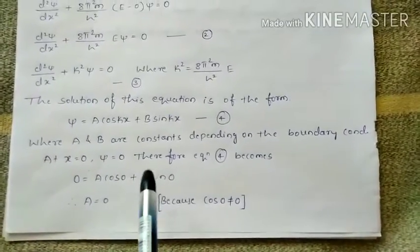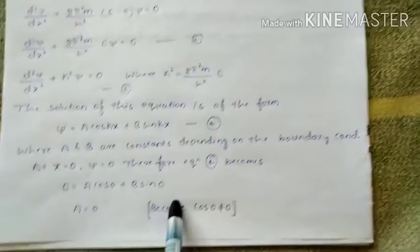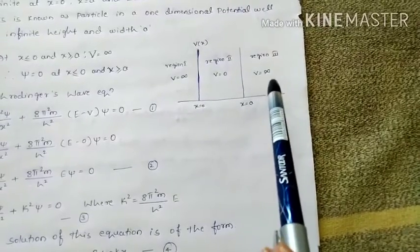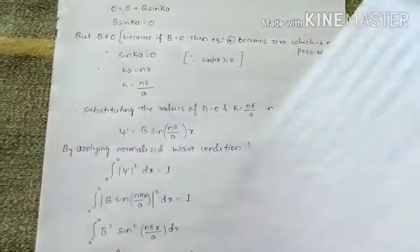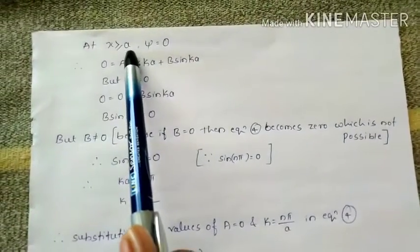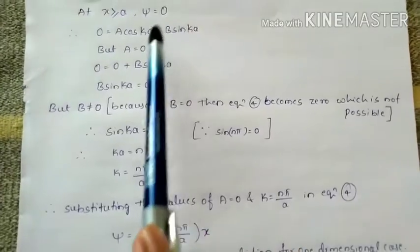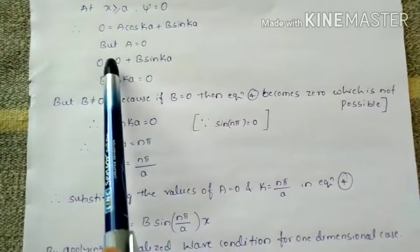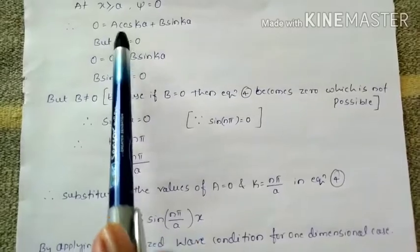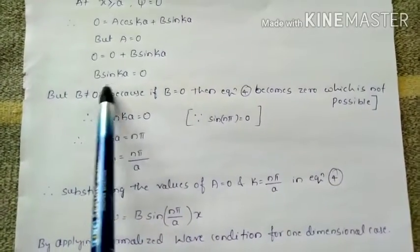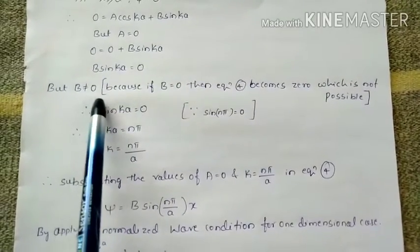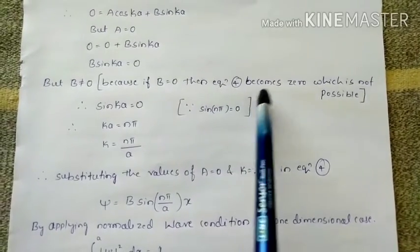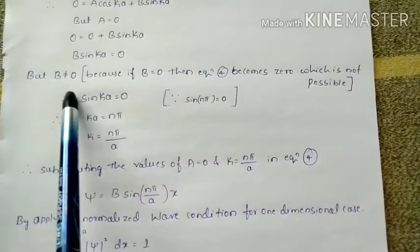To find the value of B, we consider the second boundary condition: at x equals A, psi equals 0. Substituting gives 0 equals A cos(Ka) plus B sin(Ka). Since A equals 0, this reduces to B sin(Ka) equals 0. We cannot set B equals 0, because then the wave function becomes 0 everywhere, which is not physically possible.